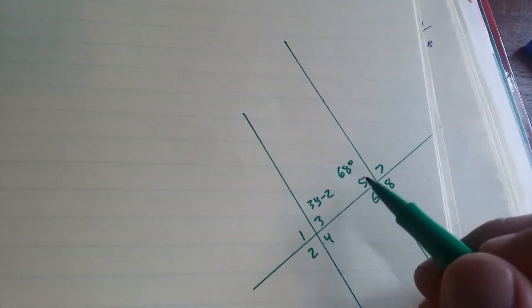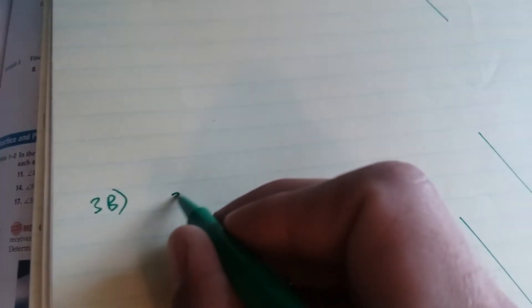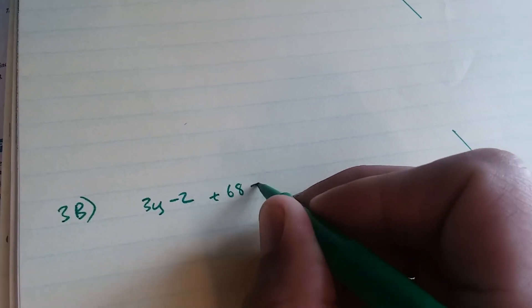These are consecutive interior angles so I know that if I add them together they're going to equal 180. So 3y minus 2 plus 68 is equal to 180.